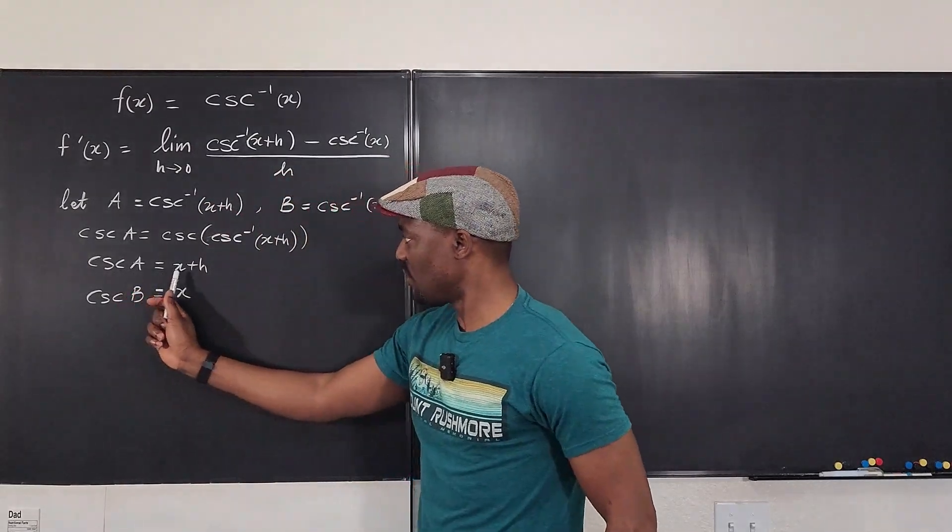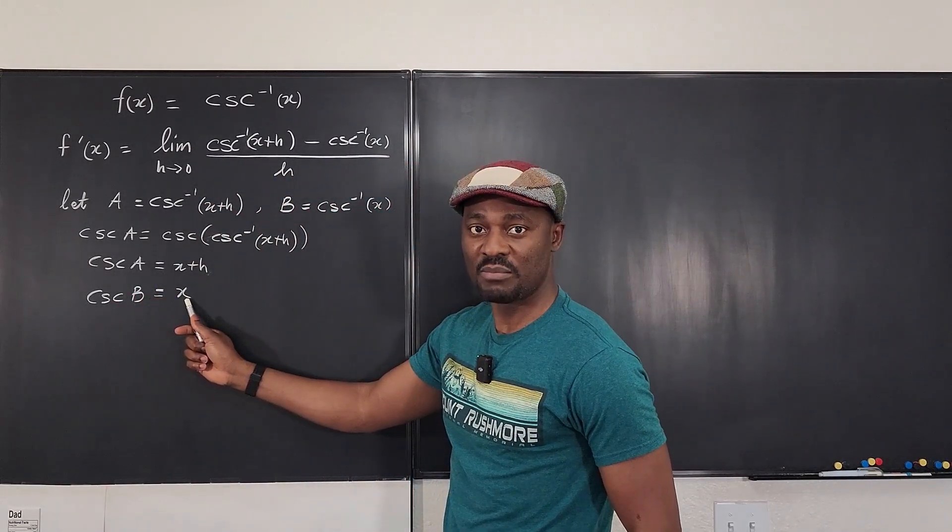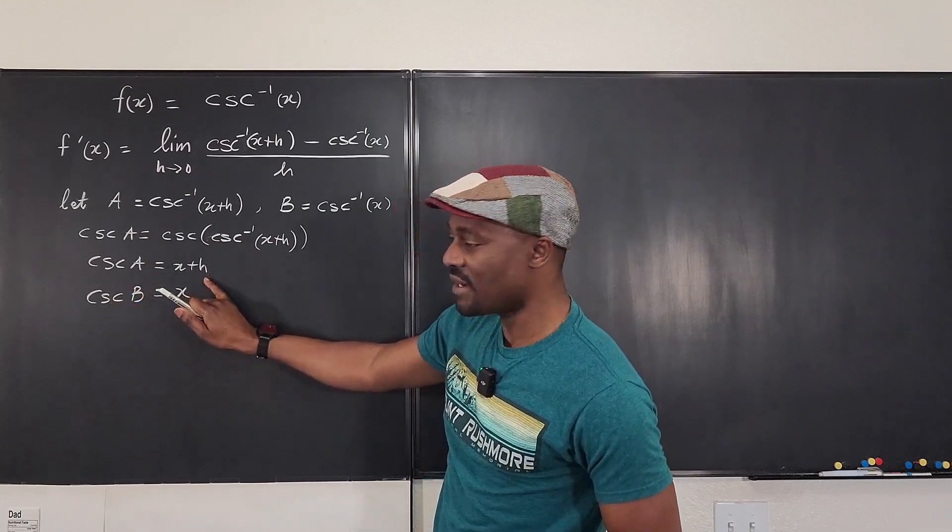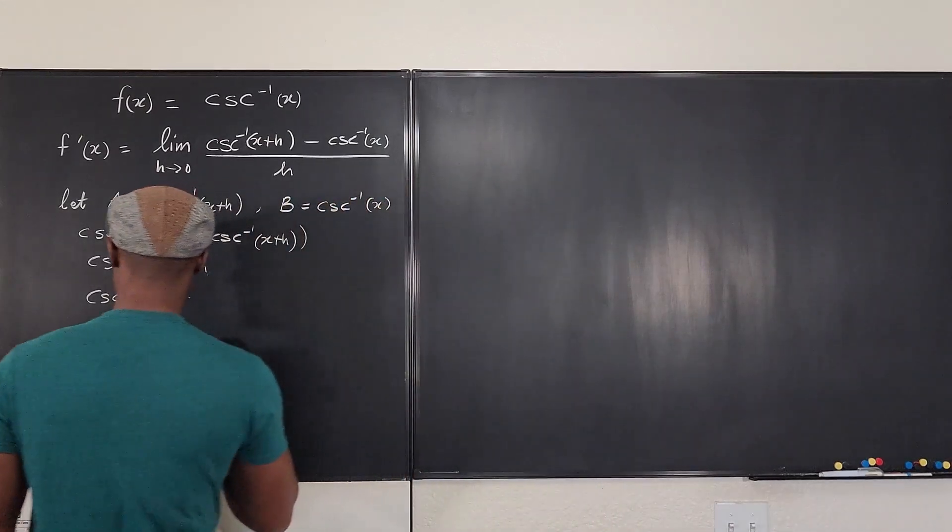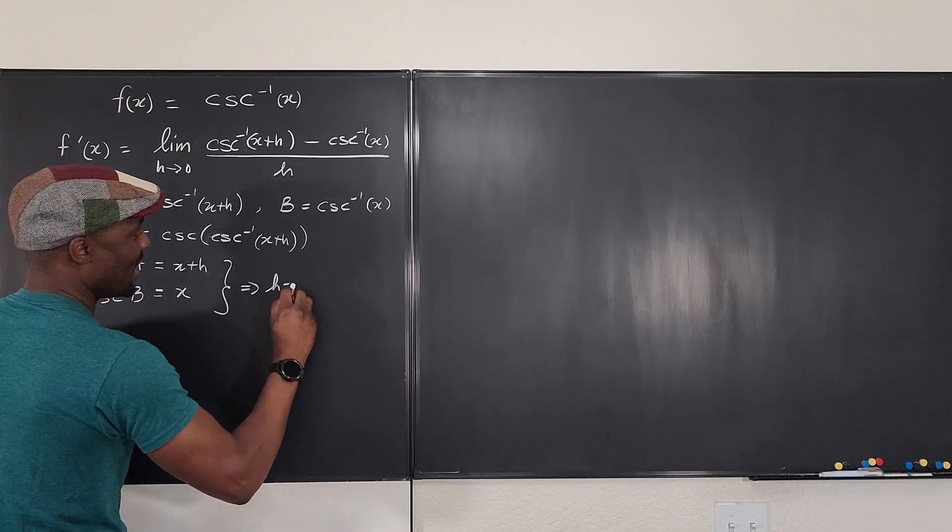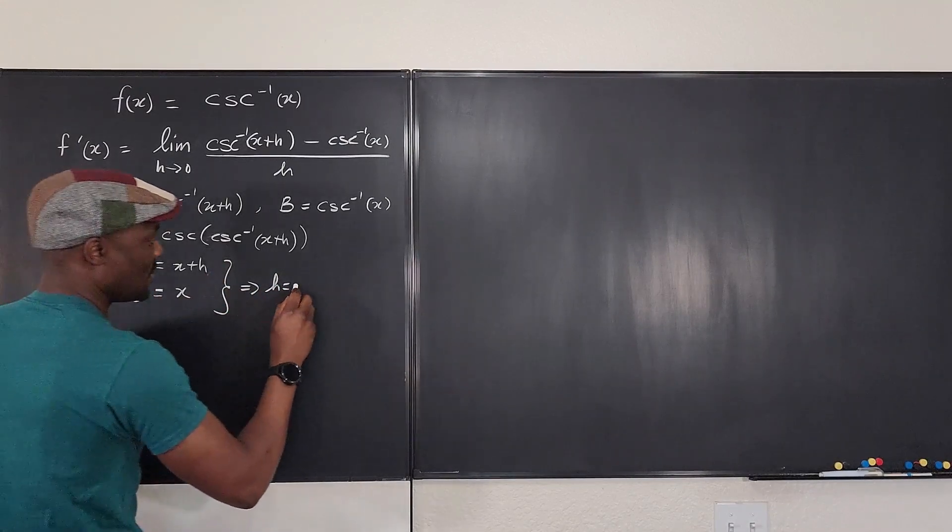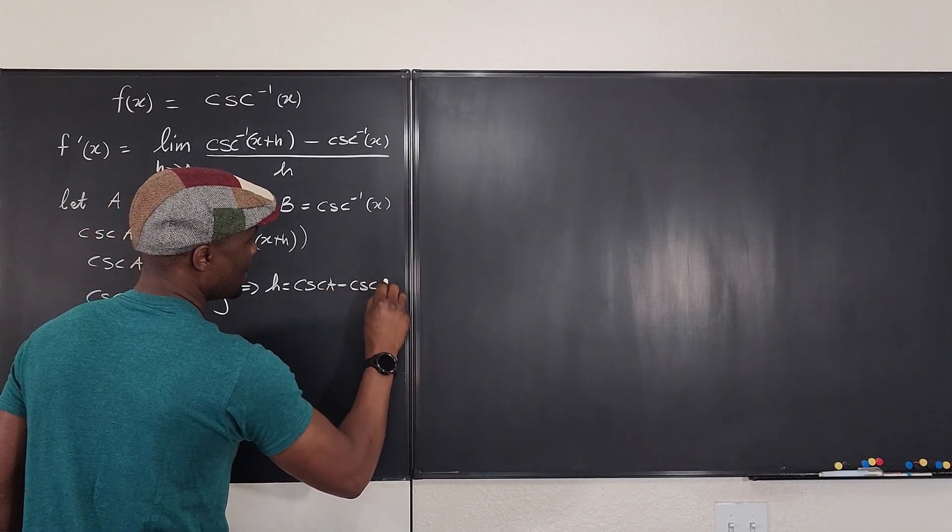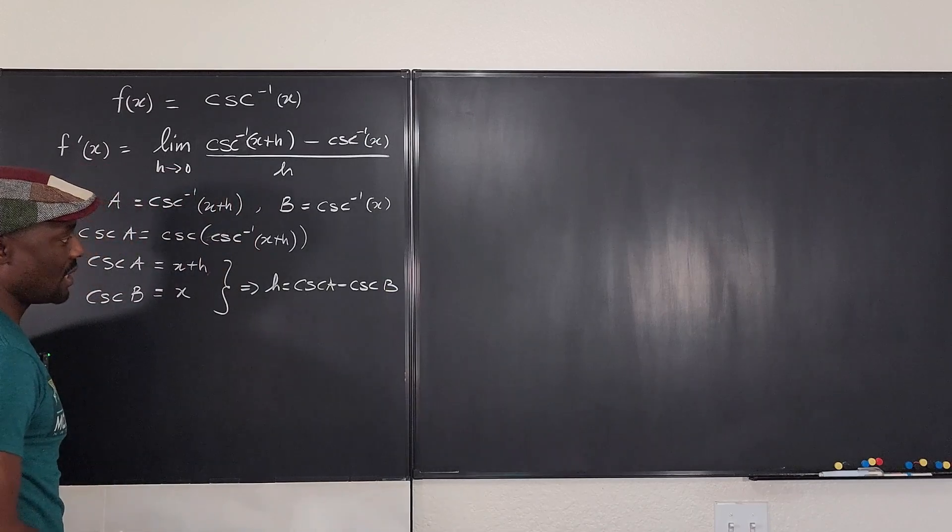So here I have cosecant a and here I have cosecant b. And that means I can subtract this from this because I want to isolate h. So I can do it this way. This implies that h equals cosecant a minus cosecant b. And I think I'm done.